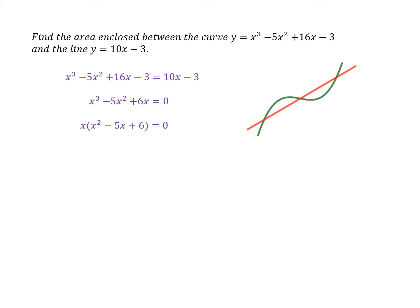There's the factorized form, and I can then factorize this quadratic expression further to give me the three factors. So there are indeed three points of intersection. This tells me that they intersect when x equals zero, x equals two, and x equals three.